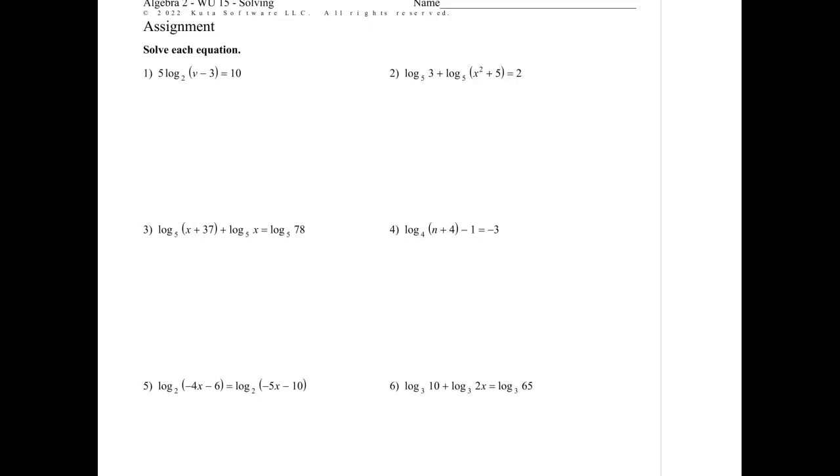So my goal is, for instance, like on number one or number four, I only see one log, and my goal is to start getting my log alone so I can get that variable alone. And so, for instance, on number four, what I'm going to do is move my addition and subtraction first. I'm going to add one, which leaves the right side now as a negative two. There is no multiplication or division to move. That log is not multiplied to the n plus four. So what I'll want to do is to get to the n now is I'll have to undo the log with an exponent, and the base I'll use as a base of four.